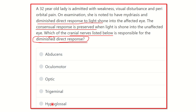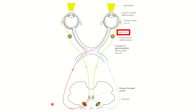We need to find which nerve is responsible for the direct light response. There are two types of responses: one is the direct response and another is the consensual response. Let's look at the light pathway. Light is shown on the cornea, reflects on the retina, produces an electrical signal, and this signal finally reaches the visual cortex. From the visual cortex, two nerve signals arise — one going to the same eye and another to the other eye.